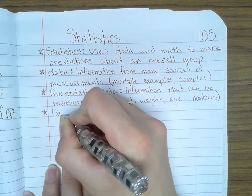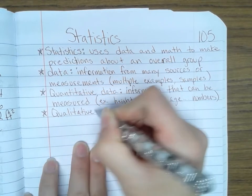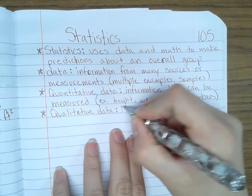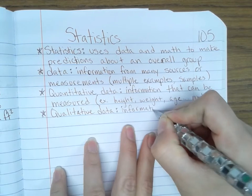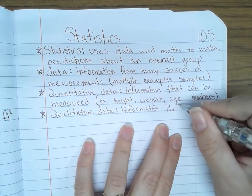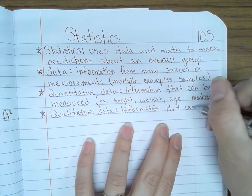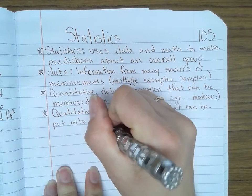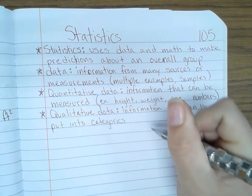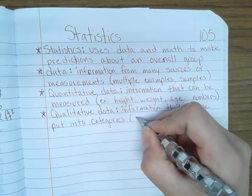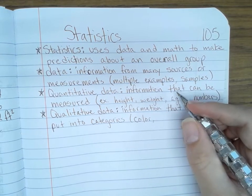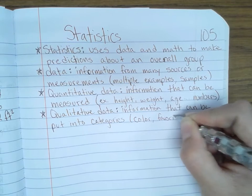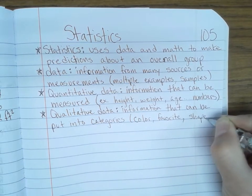Another one is qualitative data. Information that can be put in a category. Examples of that would be stuff like color, favorite, shape.